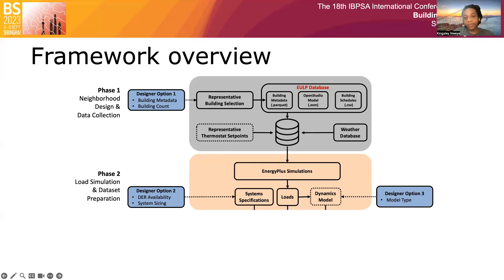In phase two, the collected data are used to run EnergyPlus simulations to obtain ideal space cooling and heating loads. Other data determined from these simulations include domestic hot water, lighting, and plug loads. Finally, the designer inputs DER availability including heat pumps, electric heaters, thermal storage, batteries, and PV systems, as well as the system sizing for the buildings, which is defined in phase two.